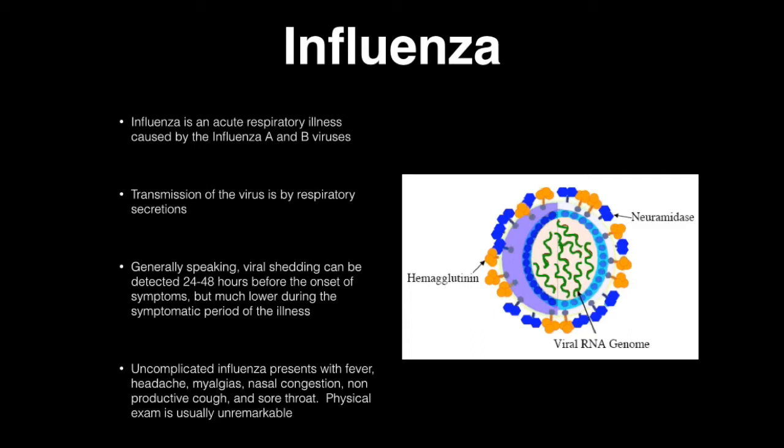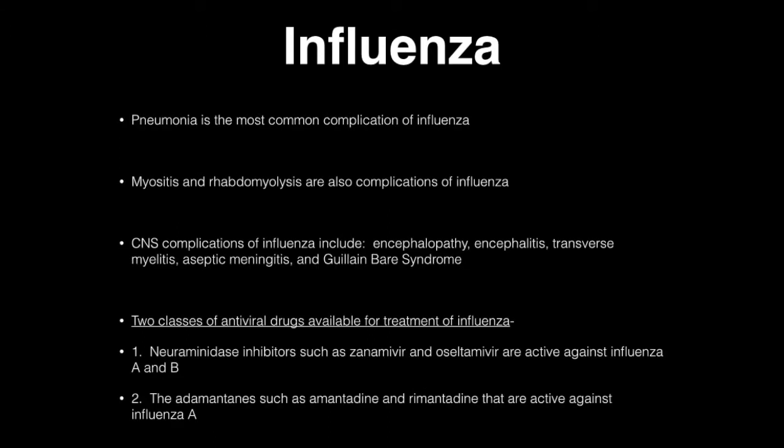Uncomplicated influenza presents with fever, headache, myalgias, nasal congestion, non-productive cough, and sore throat. Physical exam is usually unremarkable. Pneumonia is the most common complication of influenza. Myositis and rhabdomyolysis are also complications. CNS complications include encephalopathy, encephalitis, transverse myelitis, aseptic meningitis, and Guillain-Barré syndrome, though these tend to be rare.